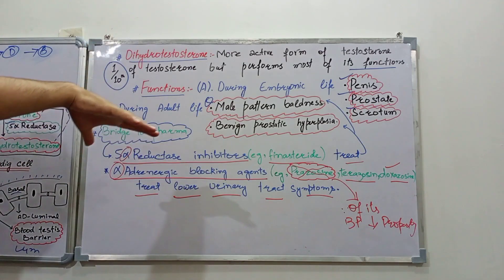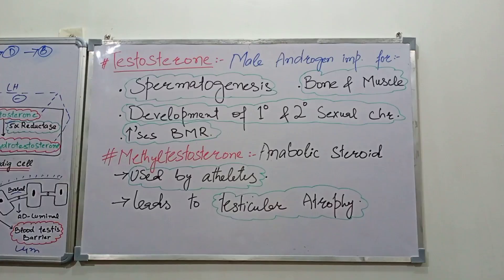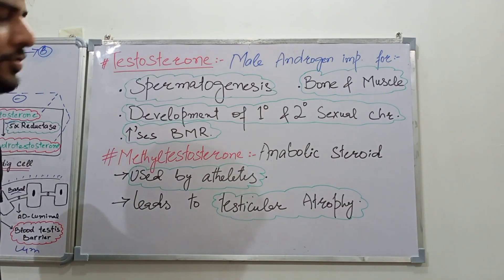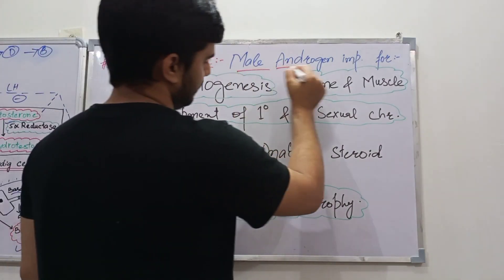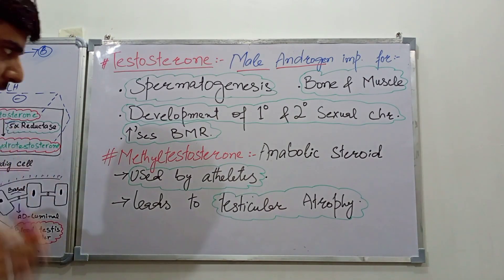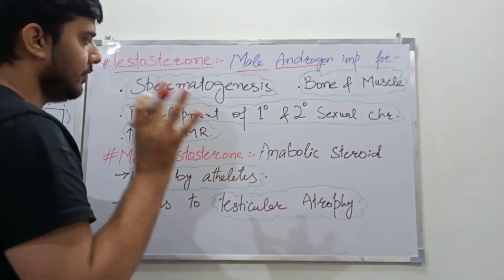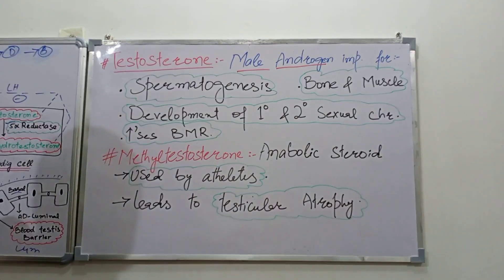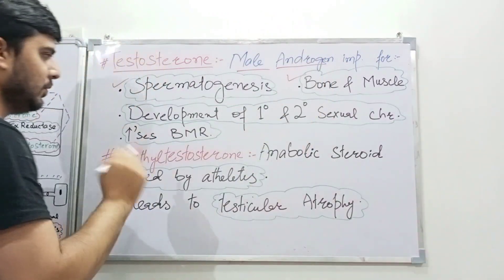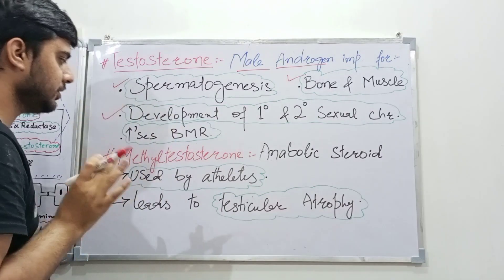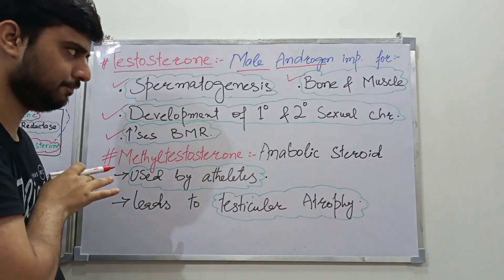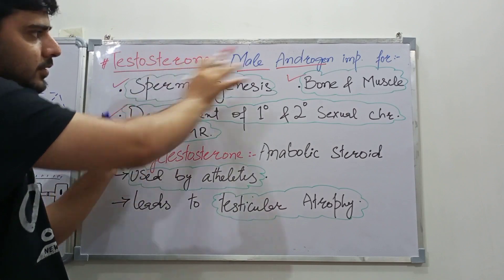We have completed the functions of dihydrotestosterone; now we will discuss the functions of testosterone. Testosterone is a male androgen with very important functions. The four key functions are: spermatogenesis, bone and muscle growth, development of primary and secondary sexual characters, and increasing the basal metabolic rate.